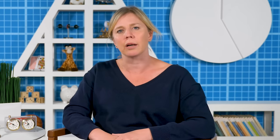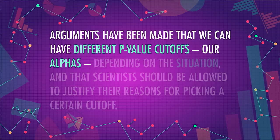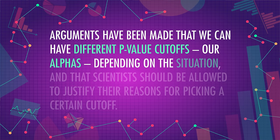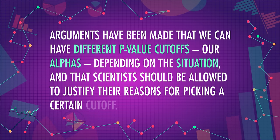Still others argue that .005 is the better cutoff. As you can see, the standard cutoff is arbitrary. Null hypothesis significance testing requires that we draw a line in the sand somewhere, but it's not clear where. Arguments have been made that we can have different p-value cutoffs, or alphas, depending on the situation, and that scientists should be allowed to justify their reasons for picking a certain cutoff. But on the whole, many fields that regularly use p-values have some sort of official cutoff that they use.